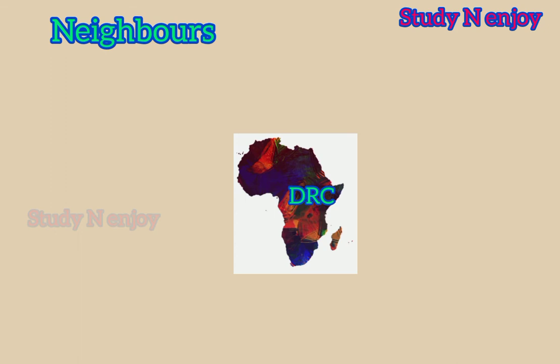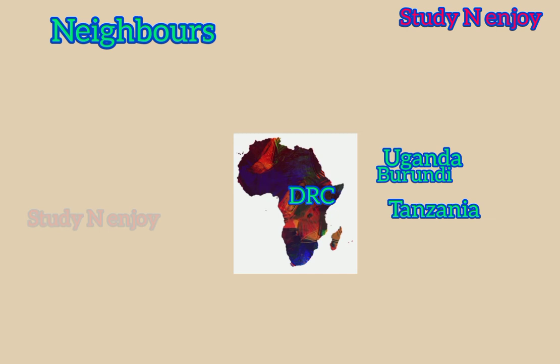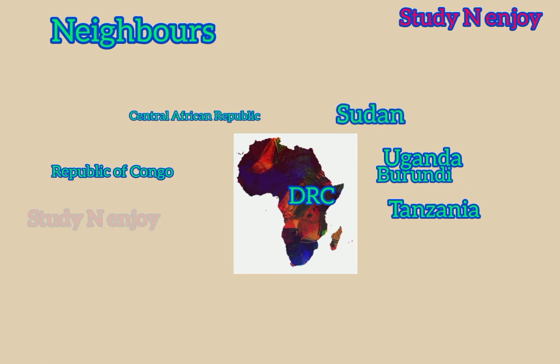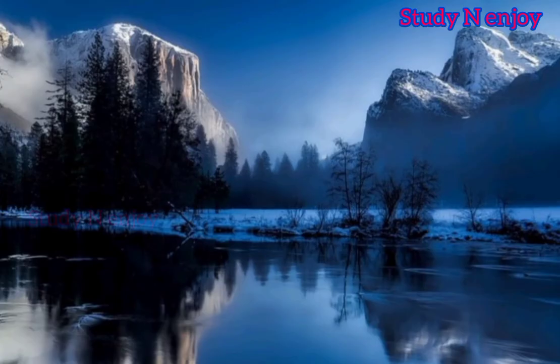The DRC shares its boundaries with neighboring countries: Uganda, Rwanda, Burundi, and Tanzania in the east; Republic of Congo in the west; Central African Republic and South Sudan in the north; and Zambia and Angola in the south. These are the neighbors of the Democratic Republic of Congo. Every country has a main river.